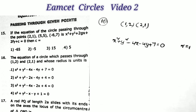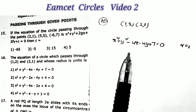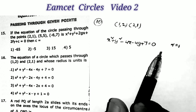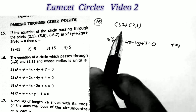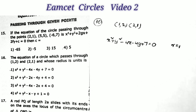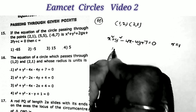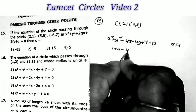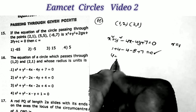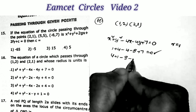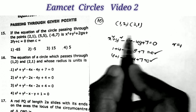Sum number 16: What is the equation of the circle which passes through the points (1, 2) and (2, 1) and whose radius = 1? Taking the first option and substituting point (1, 2): 1 + 4 − 4 − 8 + 7 = 0. Substituting point (2, 1): 4 + 1 − 8 − 4 + 7 = 0. Both points satisfy the equation.